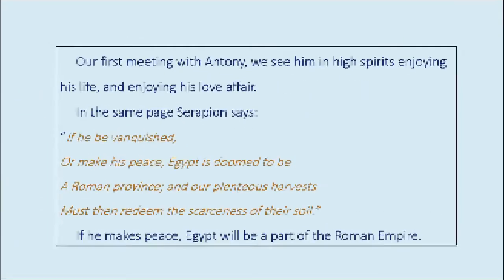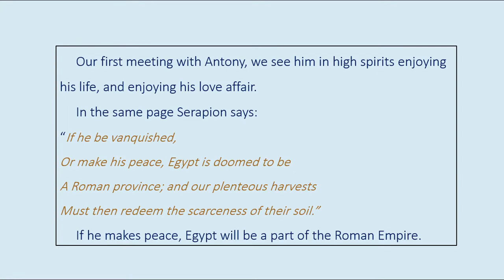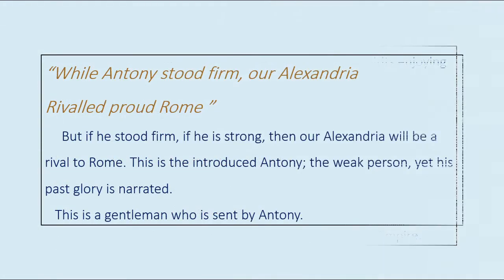Our first meeting with Antony in Shakespeare, we see him in high spirits enjoying his life and his love affair. Serapion also says: 'If he be vanquished, or make his peace, Egypt is doomed to be a Roman province, and our plenteous harvests must then redeem the scarceness of their soil.' If he makes peace, Egypt will be a part of the Roman Empire. But while Antony stood firm, Alexandria rivaled proud Rome. This is the introduced Antony — a weak person, yet his past glory is narrated.